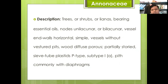Members of Annonaceae may be trees, shrubs, or lianas. They contain essential oils. Node is unilacunar or bilacunar. Vessel end walls are horizontal and simple. Vessels without vestured pits; wood diffuse-porous, partially storied. Sieve tubes are plastid P-type subtype, and pitted, commonly with diaphragms.